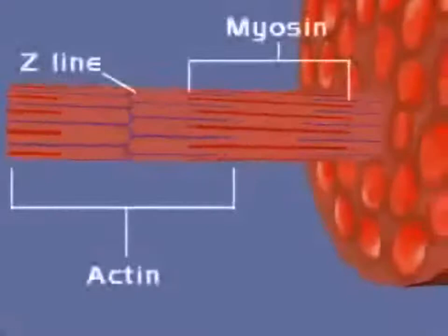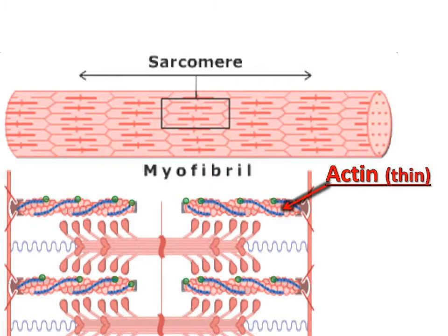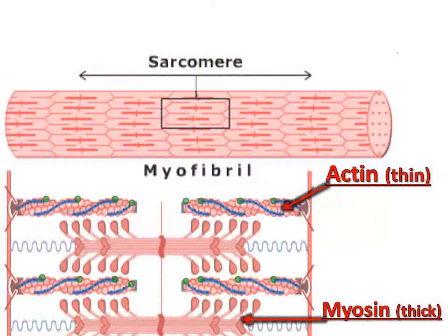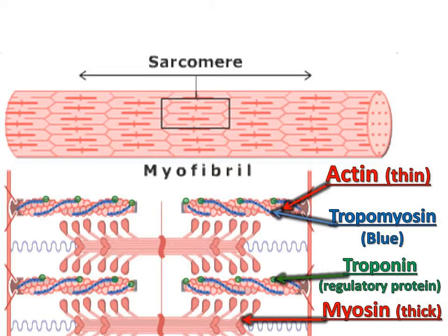In order for a muscle contraction to occur, the myosin heads have to bind to the receptor sites on actin, but this cannot happen because the binding sites are covered by a long protein called tropomyosin, which is connected to a smaller regulatory protein called troponin. So in order to expose the myosin binding sites and initiate muscle contraction, the sarcoplasmic reticulum releases calcium ions, which bind to troponin, which moves tropomyosin, which exposes the myosin binding sites, which allows the myosin heads to form a cross-bridge.